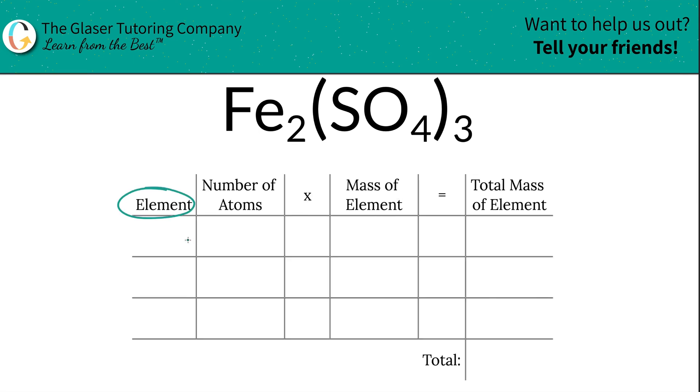Bam. So the first step is to write down the elements we see in the compound. So we have iron, we have sulfur, and we have oxygen.